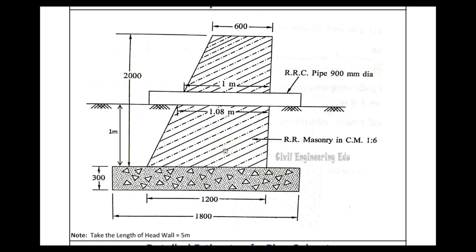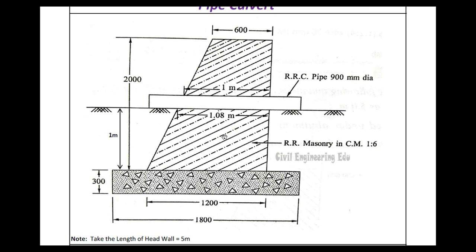This is the figure of a pipe culvert. You can see ground level here — the structure below ground level and the structure above ground level. From ground level to bottom of PCC we do earthwork excavation. The PCC dimension given is 1.8 meters, thickness is 300 mm, and from ground level to top of PCC is 1 meter, so total depth of excavation is 1 meter plus 300 mm, which is 1.3 meters.